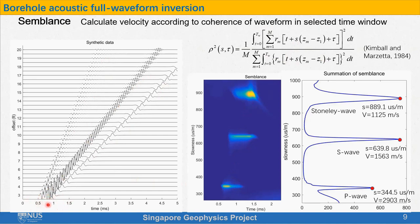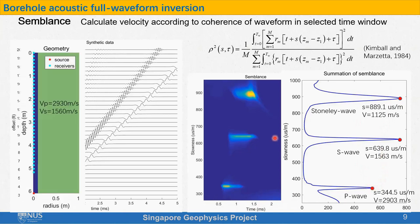We just need to know that the bright points on the semblance panel indicate slowness and the interception time of the elastic waves. Usually we are not interested in the interception time, so we can stack the 2D panel in time and obtain a curve. The peaks on the curve indicate the slowness or velocities of the formation. Semblance is fast and stable, and the acoustic logs are obtained by using semblance.